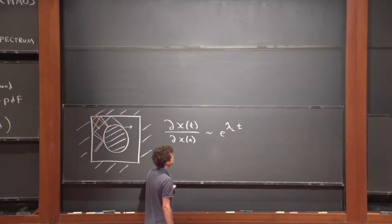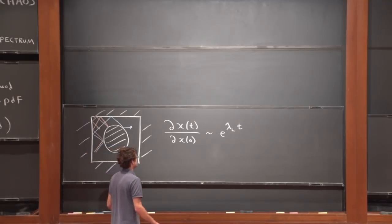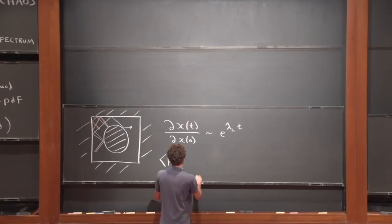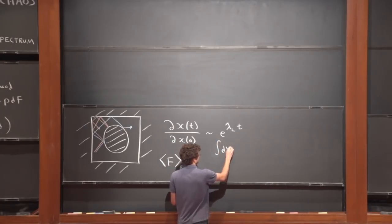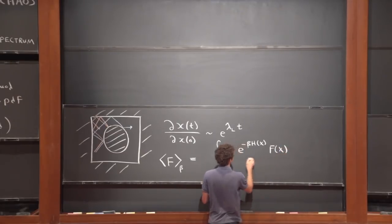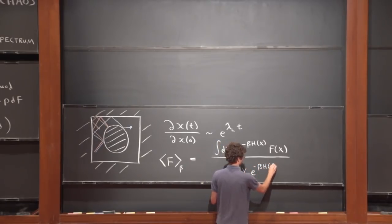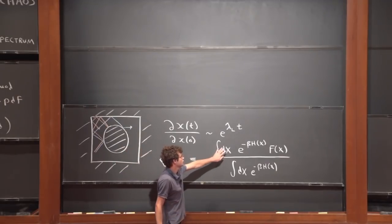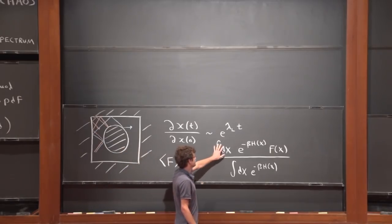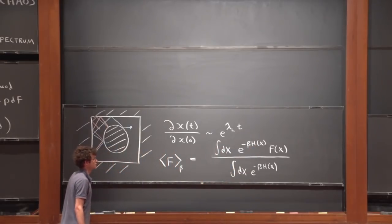To discuss this in more detail, it's helpful to have a notion of thermal expectation values, which we can define in classical systems as follows. We define the thermal expectation value of some function of phase space at inverse temperature beta as the integral over phase space. Here X represents a combined coordinate for all phase space coordinates, including the positions and their conjugate momenta. The integral DX is over phase space with a symplectic measure, and H is the energy of the system. F could be a general function of the phase space coordinates.